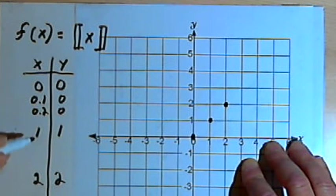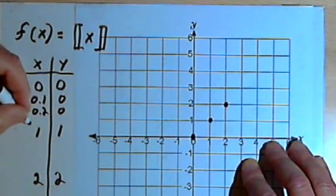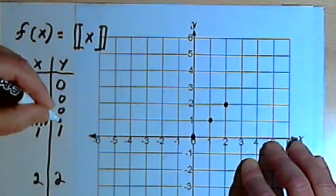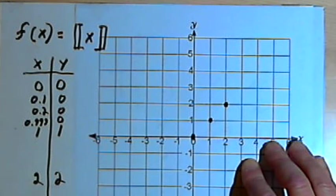And that's going to happen all the way up to, but not quite including, 1. So in other words, 0.999 would give me a greatest integer value of 0.